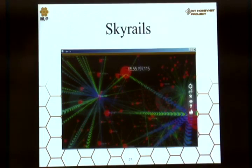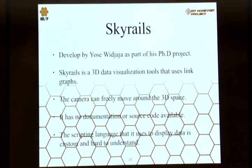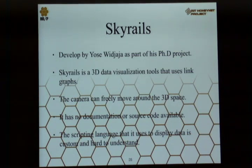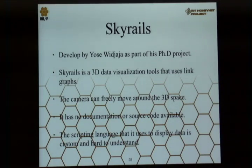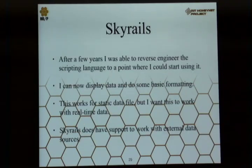Now to SkyRails. SkyRails was a program I found about three or four years ago during labs. It looks really nice but is a pain to work with. This was someone's PhD project. What SkyRails does is it visualizes data in 3D space — the camera can move freely throughout the space. Unfortunately there's no documentation for this program, no source code available, and the scripting language is custom and quite hard to understand. After about a few years I was able to at least reverse engineer the scripting language to a point where I could actually display stuff.